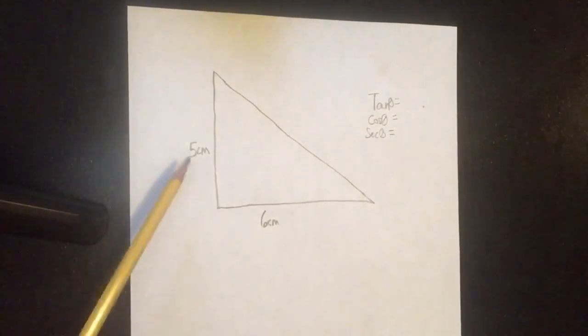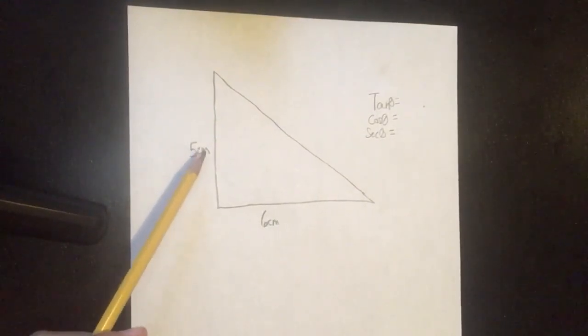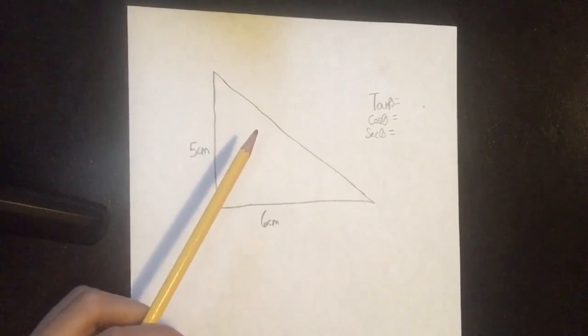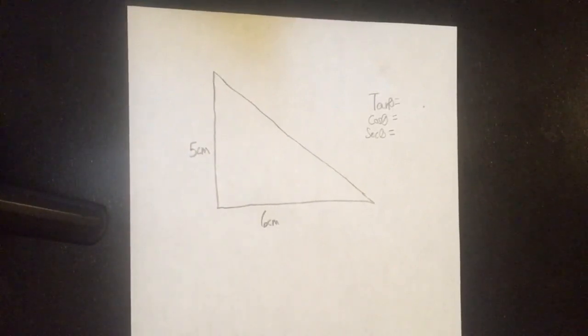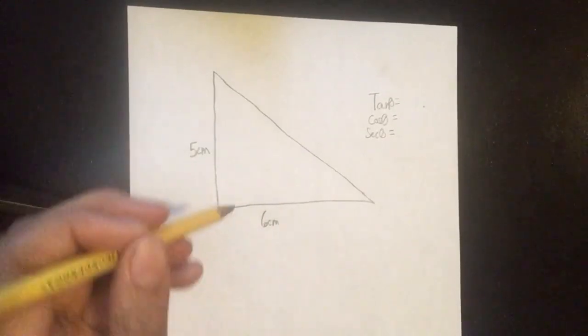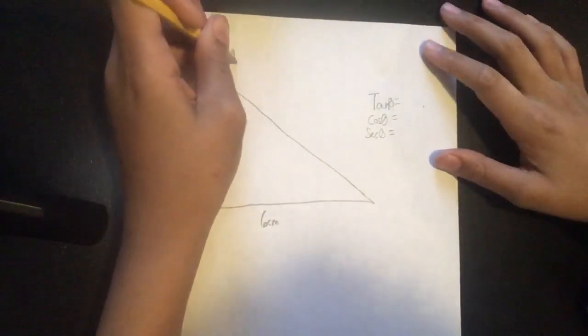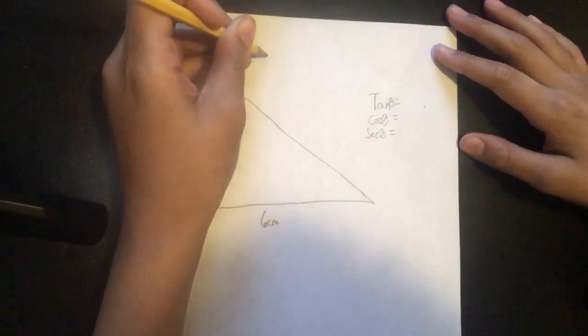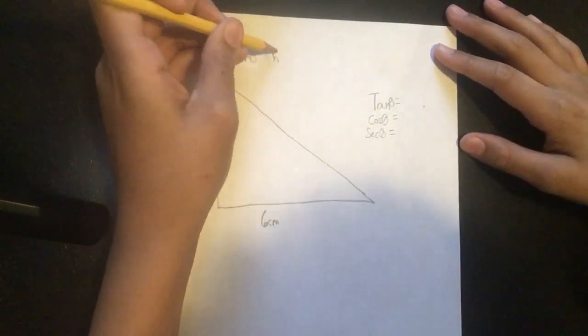We have 5 centimeters as the opposite and 6 centimeters as the adjacent, but we don't have the hypotenuse. How do we find the hypotenuse? We use the Pythagorean theorem. The Pythagorean theorem is adjacent squared plus opposite squared equals the hypotenuse squared.